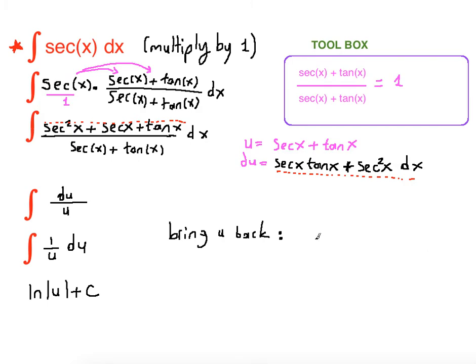Now bring u back. What was u? U was secant x plus tangent x. So it's going to be ln absolute value secant x plus tangent x plus c.